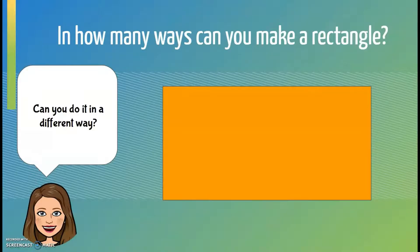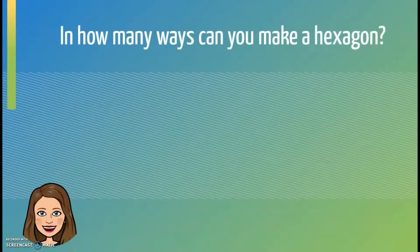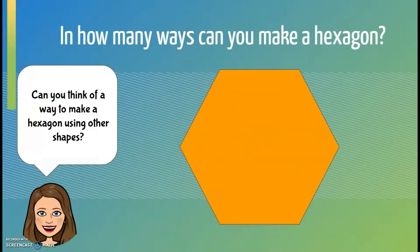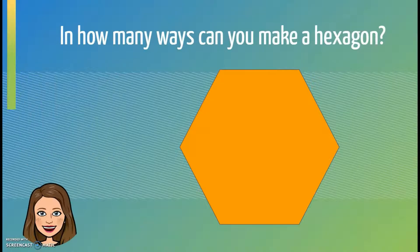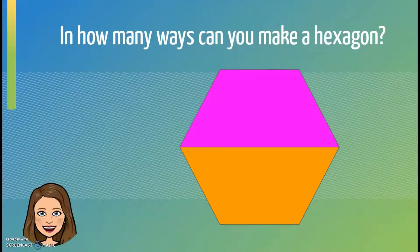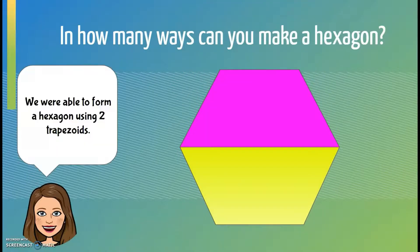Can you do it in a different way? Alright, let's move on to the hexagon. Can you think of a way to make a hexagon using other shapes? A trapezoid and another trapezoid. We were able to form a hexagon using two trapezoids.